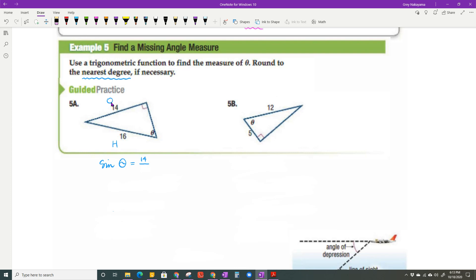Opposite is 14, hypotenuse is 16. So I would write theta equals the inverse sine of 14 over 16, because that helps me know what button I have to use on my calculator. Theta equals 61.045, to the nearest degree is going to be 61 degrees.